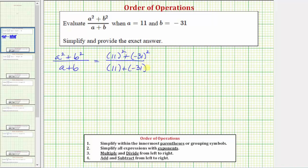When we have an expression in fraction form, we simplify the numerator and denominator separately, using the order of operations, and then simplify the fraction. So in the numerator, the first step is to simplify the exponents.